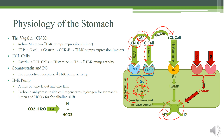Histamine activates these pumps through the H2 receptor, which is coupled with a GS protein. If you recall, GS protein is always associated with an increase in cyclic AMP, and cyclic AMP usually means that the body is trying to activate an enzyme or a pump. In this case, we're activating the hydrogen-potassium pump. So now we've got a lot of pumps moved to the cell surface, and we're activating them — we're making a whole lot of acid.